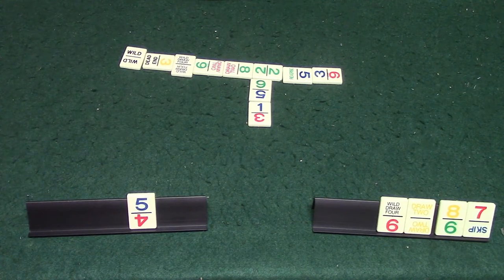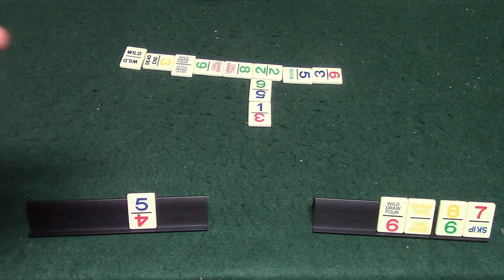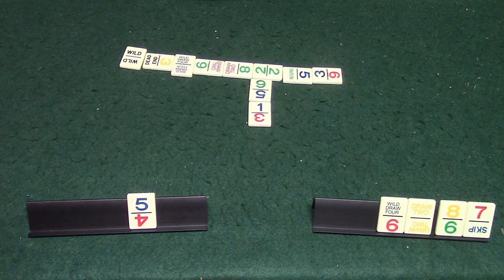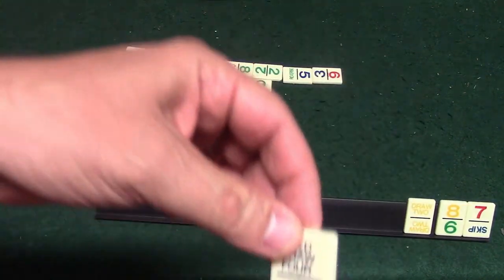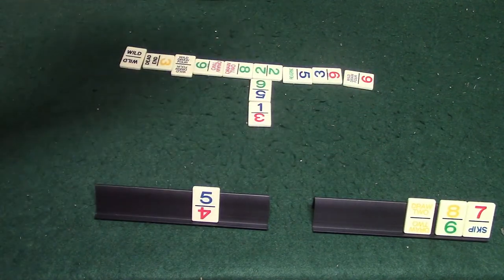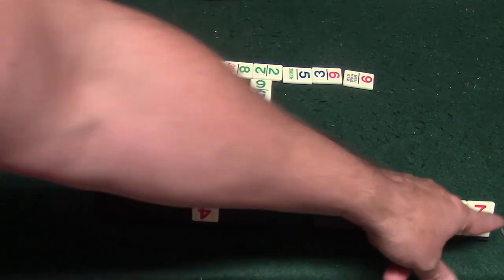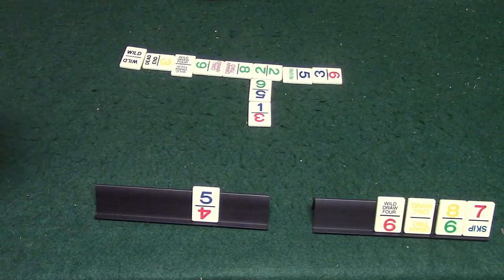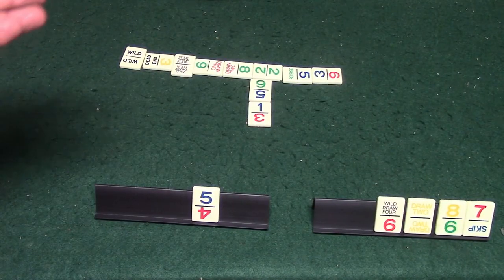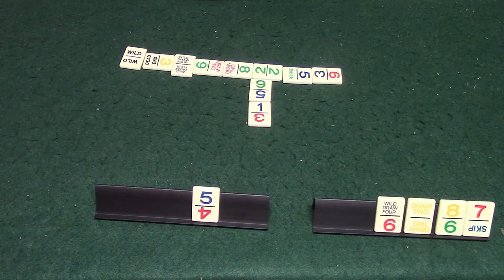Another little rule is if you play a wild draw four, you have to make sure that you don't have any playable colors. So for example if this guy decided to play a wild draw four over here like this, technically he can't do that because he has a playable red over here and also on this side. He can try to do that, but if someone calls him out on it and he gets busted, he's going to have to draw four tiles.